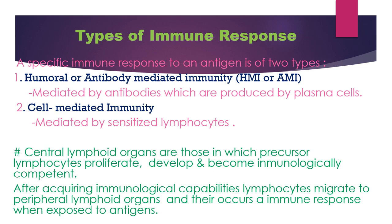Central lymphoid organs are those in which precursor lymphocytes proliferate, develop, and become immunologically competent. After gaining these capabilities, lymphocytes migrate to peripheral lymphoid organs, where an immune response occurs when they are exposed to antigens.